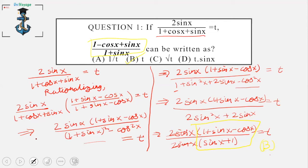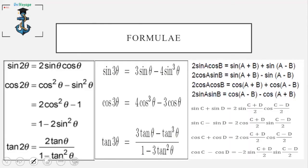I would not advise you to do these questions in the first go. In the examination hall, go through the easy questions first and then come back for questions that take more than a minute. These formulae are really important for exams like DU J and IPMAT because they can ask questions involving knowledge of trigonometric ratios and their identities.